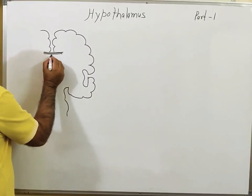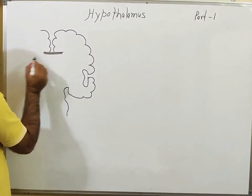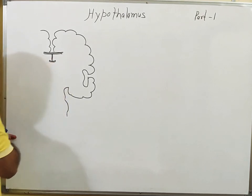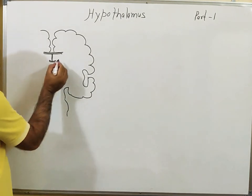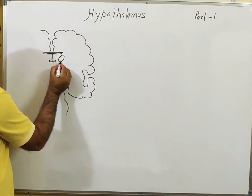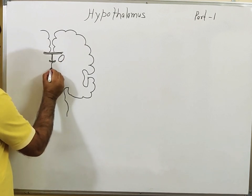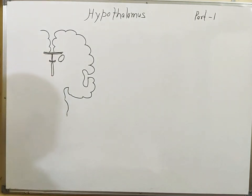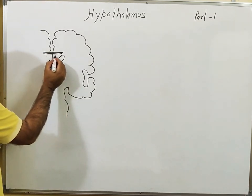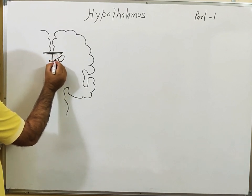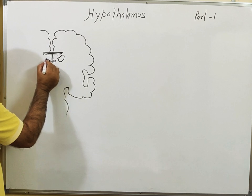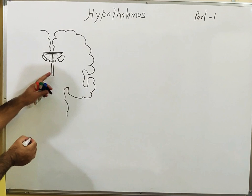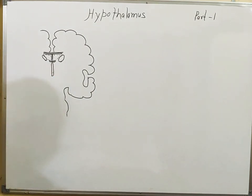In the coronal section, this is the corpus callosum, this is the septum pellucidum, here is the fornix. This is the position of the caudate nucleus. This is the position of the third ventricle.